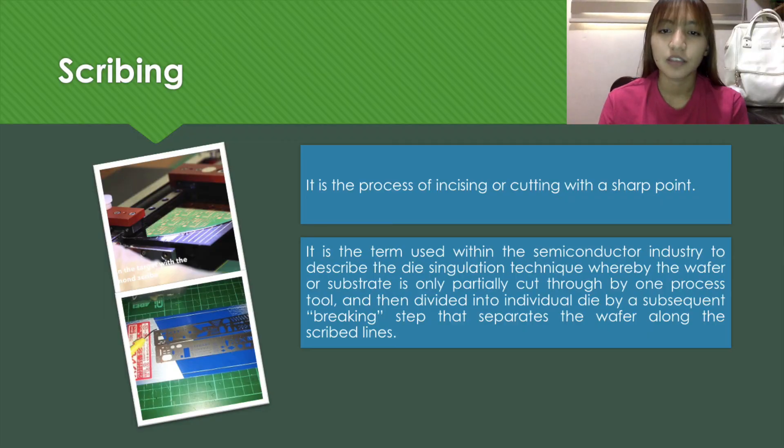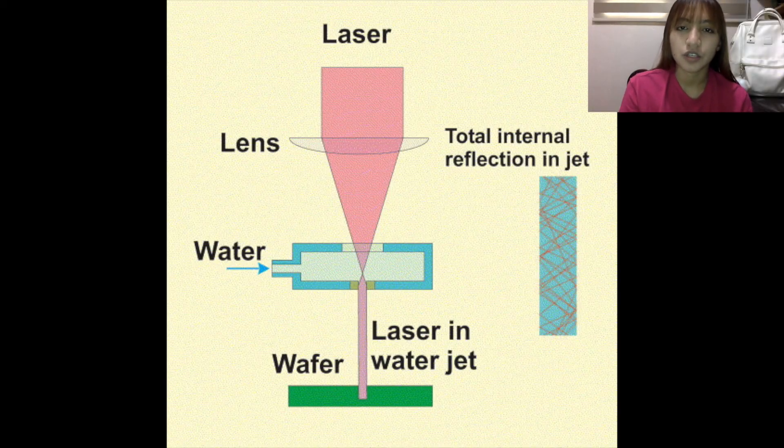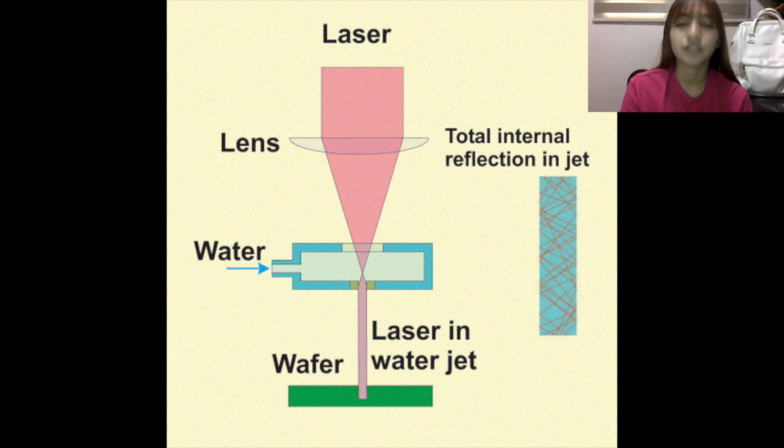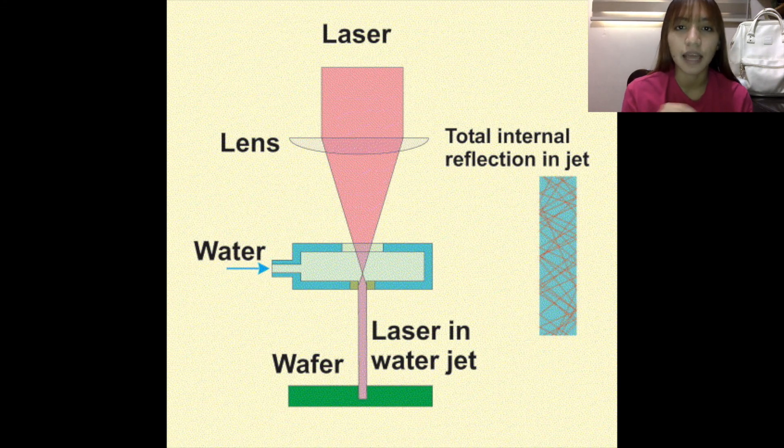And the last IC terminology is scribing. Scribing is a process of incising or cutting with a sharp point. It's the term used within the semiconductor industry to describe the die circulation technique whereby the wafer or substrate is only partially cut through by one process tool and then divided into individual die by a subsequent breaking step that separates the wafer along the scribed lines. Basically, scribing is just a term used in the semiconductor industry. The point is when scribbles or lines are used in the wafer.